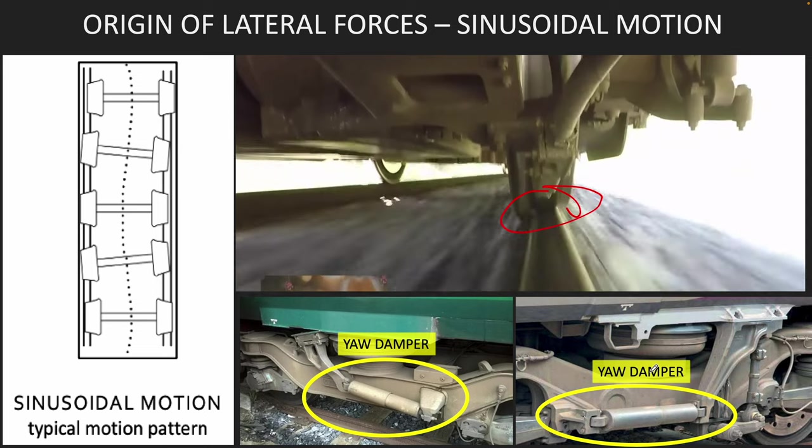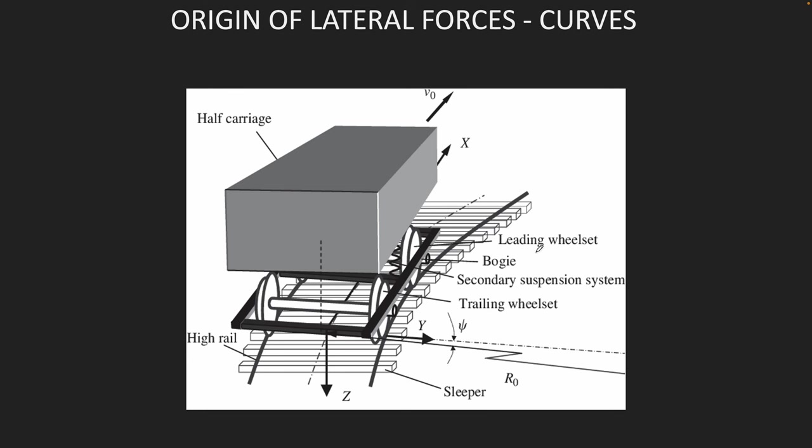Another reason are lateral forces because of curves. If you ever drive a car or been in a car and your car takes a sharp curve, you will feel an outward force pushing you out. Same thing happens with the train. Anytime the train is going on a curve, there's an outward force pushing it out and the same outward force is also felt by the wheel.